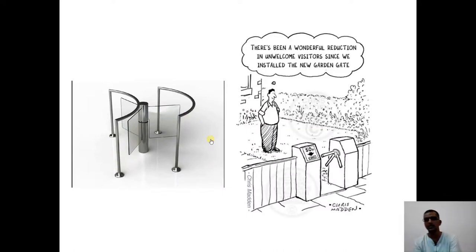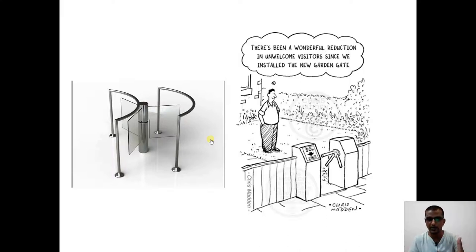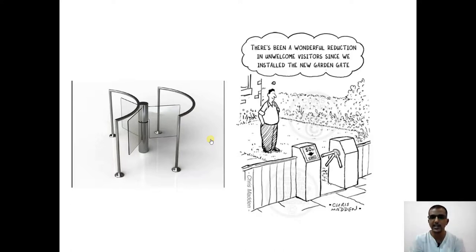Some applications of the ratchet and pawl mechanism include the turnstile gate. When you enter a metro station or any other place, entry should be one-way only — people cannot exit from that gate. The gate rotates only in one direction and cannot rotate in the opposite direction. Such gates are called turnstile gates and they operate on the ratchet and pawl mechanism.